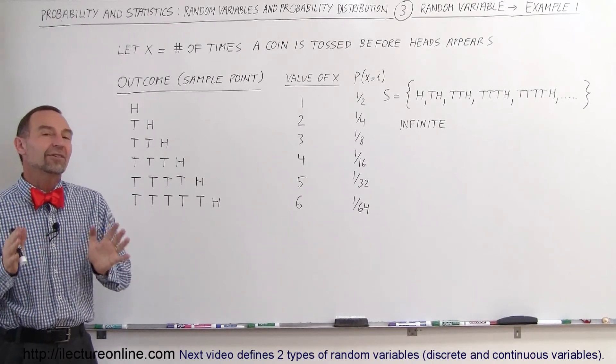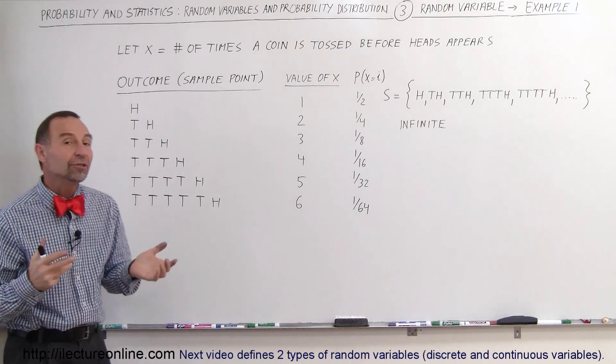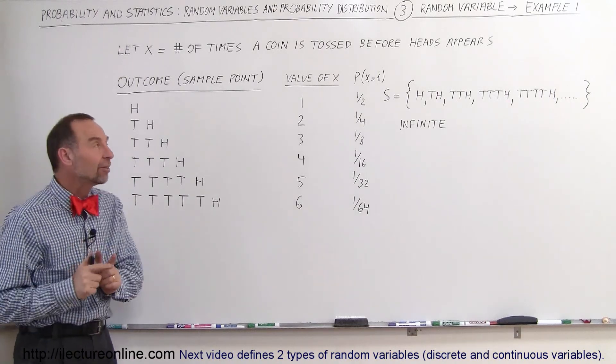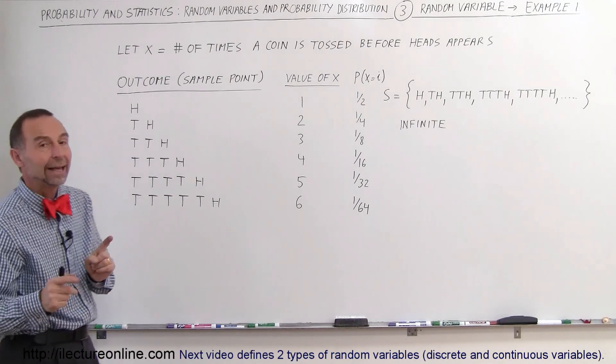Welcome to ilectureonline, and in this example we're going to see that X could be an infinite number of possibilities. In this case, a random variable X is the number of times a coin is tossed before heads will appear.